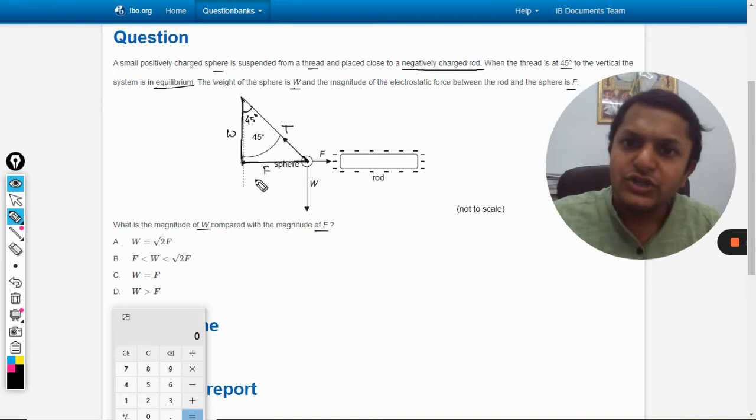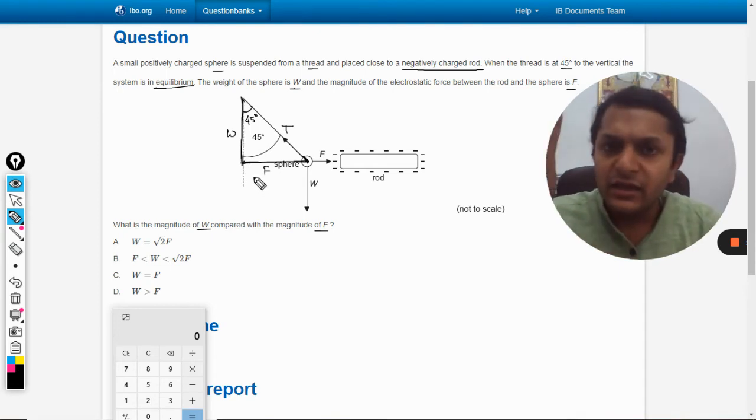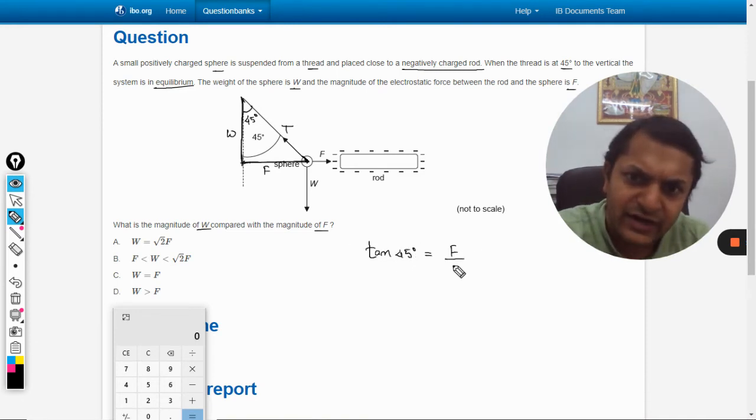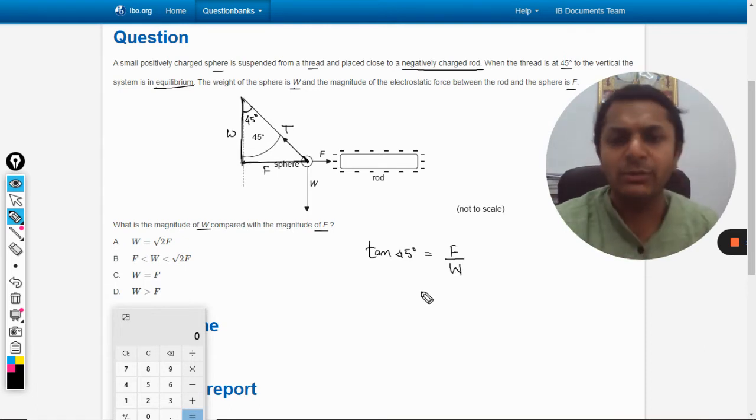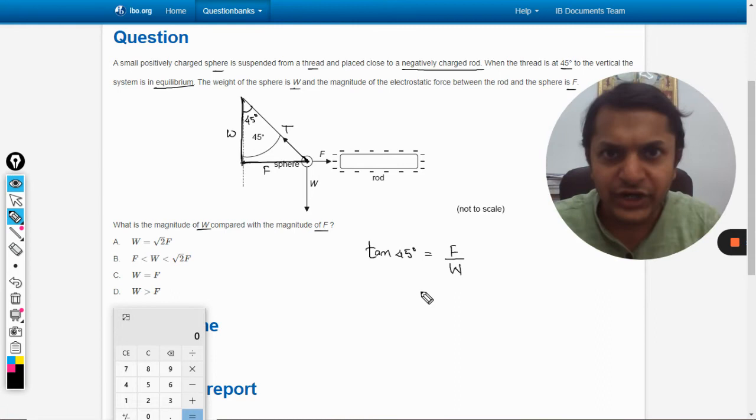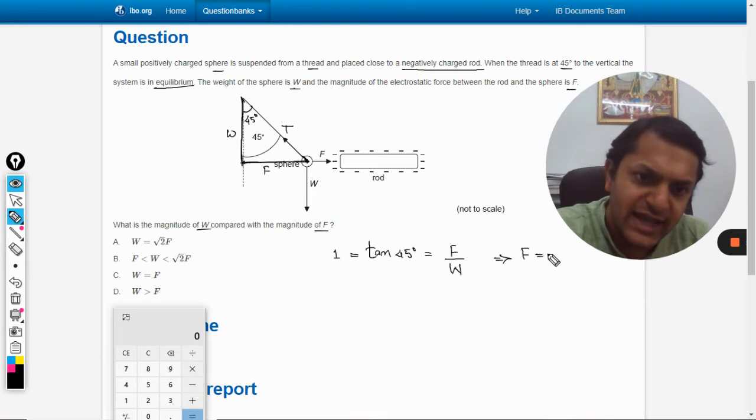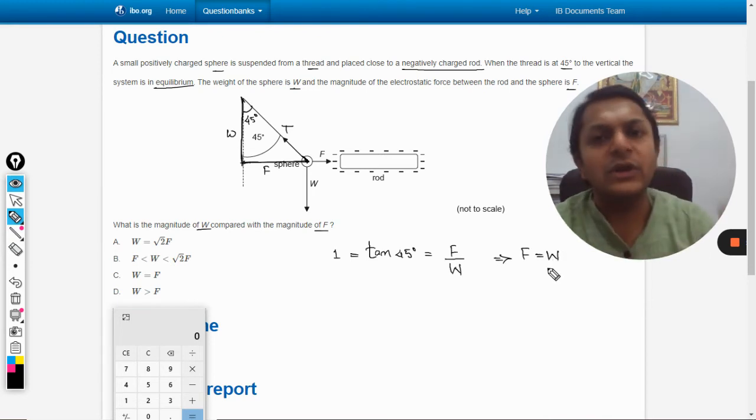Tan 45 degrees equals F divided by W. What is tan 45°? It equals 1, so this equals 1, and thereby we reach the conclusion that F equals W. At that instant when the angle is 45 degrees specifically, equilibrium is taking place.